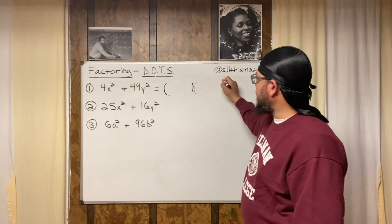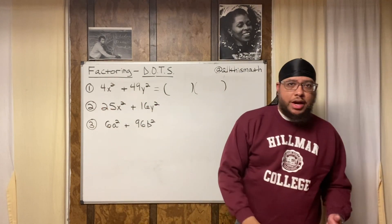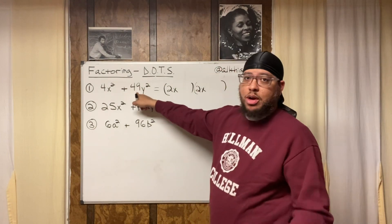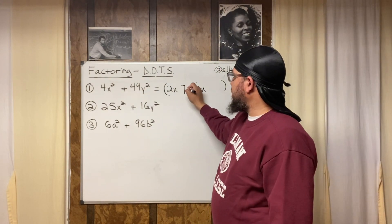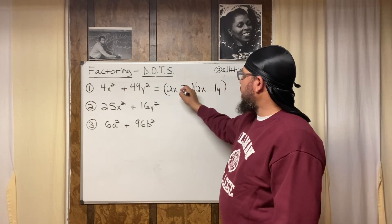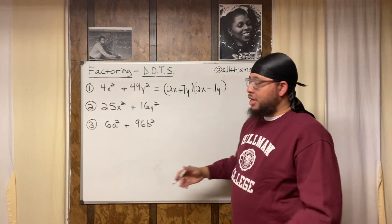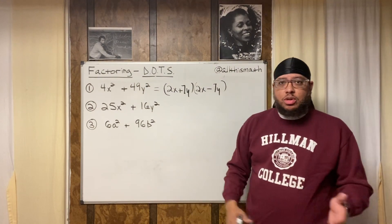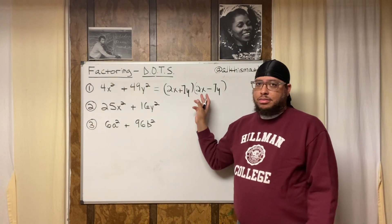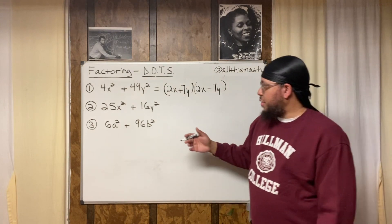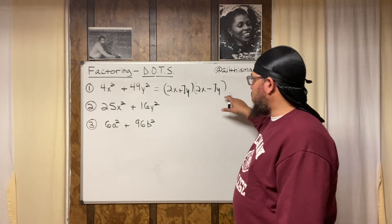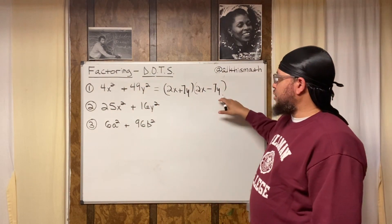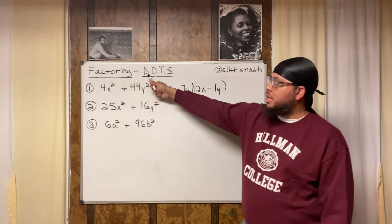So they'll say, let's get to it — they'll open two parentheses, take the square root of 4x-squared, which is 2x, put 2x in each parenthesis. Then they take the square root of 49y-squared, which is 7y, put 7y in each parenthesis, put the plus sign and minus sign, and think they're done. But this is not correct.